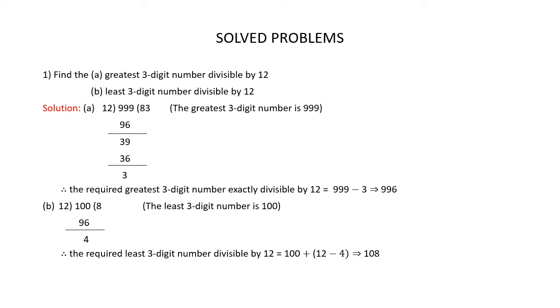So, the greatest 3-digit number divisible by 12 is 996, and the least 3-digit number divisible by 12 is 108.